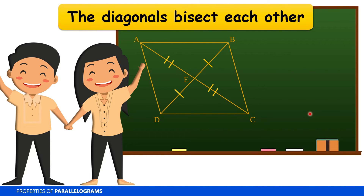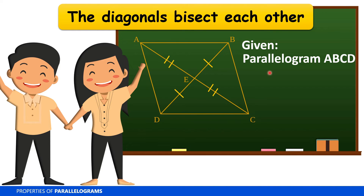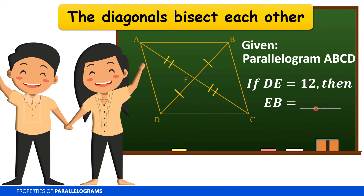Still in parallelogram ABCD, if DE is equal to 12, then EB is equal to 12, because EB is congruent to DE — they are the two equal halves of diagonal BD.